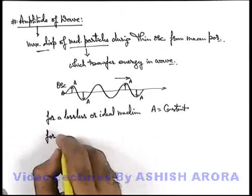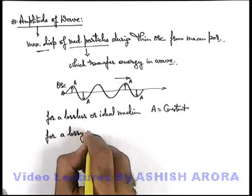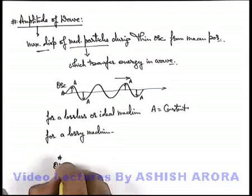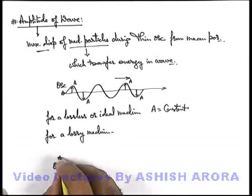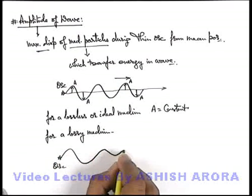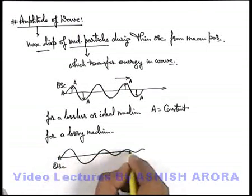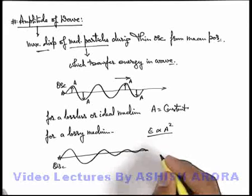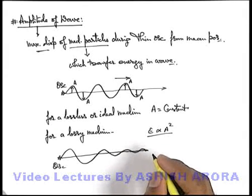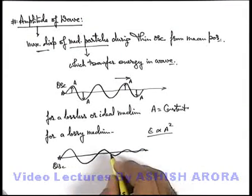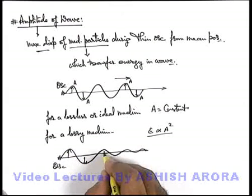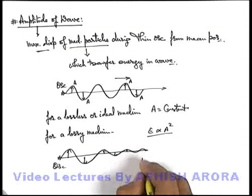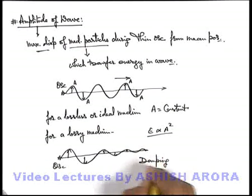When we talk about a lossy medium — in which energy losses take place — what happens is the oscillator produces oscillations but as the wave propagates, the amplitude of oscillation decreases. Because we know that energy of oscillation is directly proportional to the square of amplitude for a particle which is oscillating, and if some energy loss takes place gradually the oscillation amplitude will decrease as energy decreases due to energy losses. These energy losses we call damping.